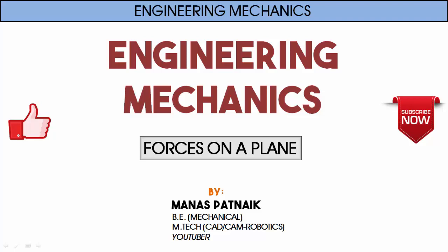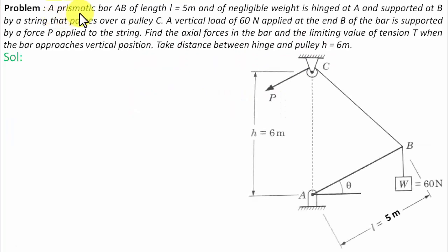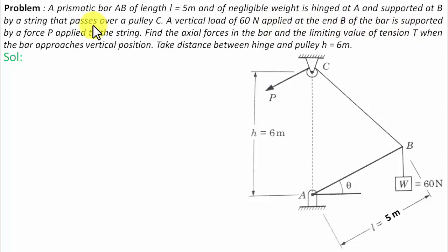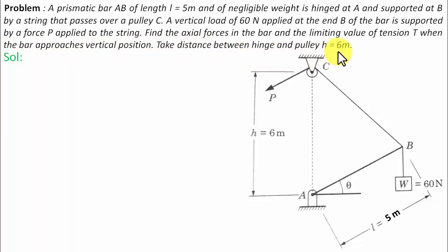A prismatic bar AB of length L equal to 5 meters and negligible weight is hinged at A and supported at B by a string that passes over a pulley C. A vertical load of 60 Newtons applied at the midpoint of the bar is supported by a force P applied to the string. Find the axial forces in the bar and the limiting value of tension T when the bar approaches the vertical position. Distance between hinge and pulley H is equal to 6 meters.